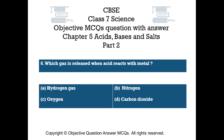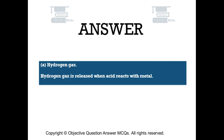Question number 6. Which gas is released when acid reacts with metal? Option A: hydrogen gas. Option B: nitrogen. Option C: oxygen. Option D: carbon dioxide. The right answer is option A — hydrogen gas. Hydrogen gas is released when acid reacts with metal.